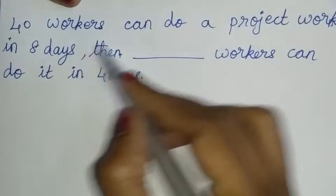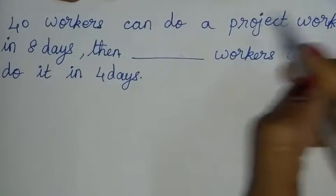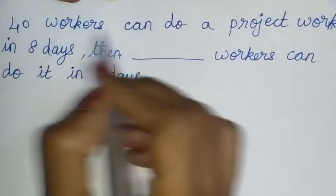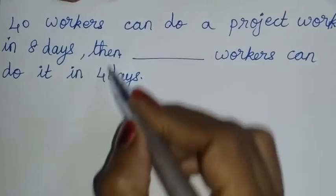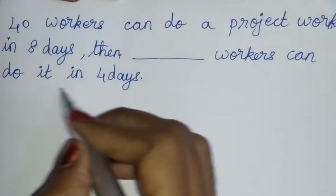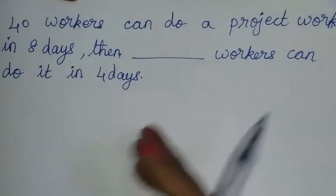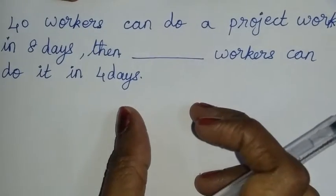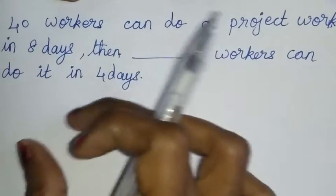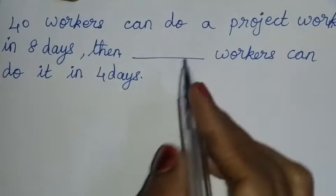40 workers can do a project work in 8 days. Then dash workers can do it in 4 days. Days, time, persons or workers relate to you in inverse proportion.